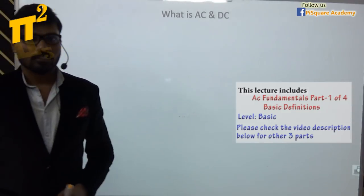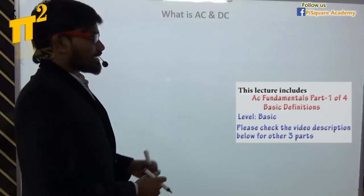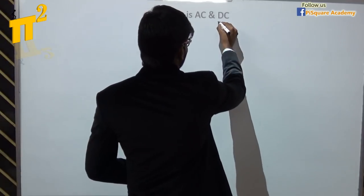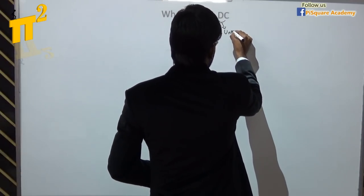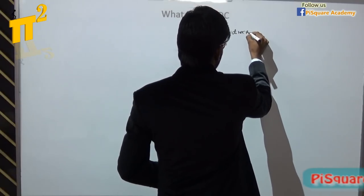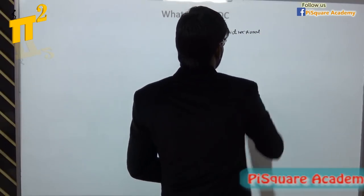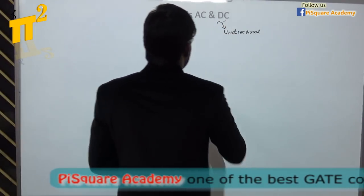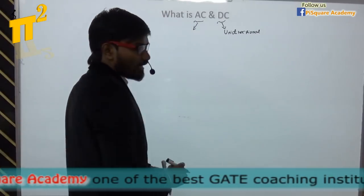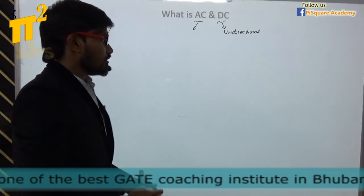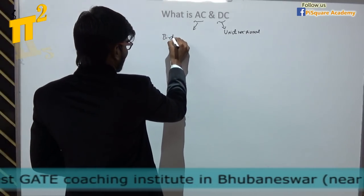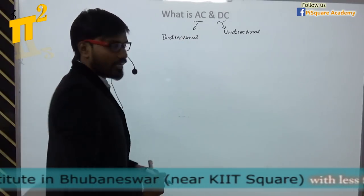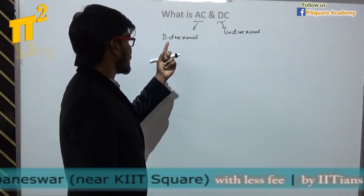So before we go to fundamentals of AC, let's talk about what is AC and what is DC. DC basically means unidirectional — we are lazy to call it unidirectional, that's why we simply call it DC. And AC means alternating in direction, so it is actually bidirectional. We will simply call it AC — alternating, or actually it is bidirectional.